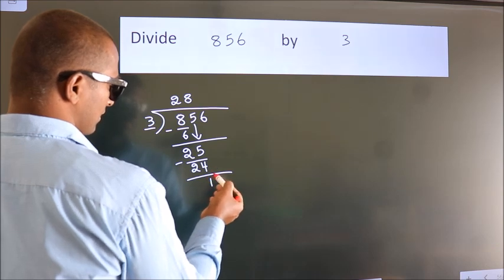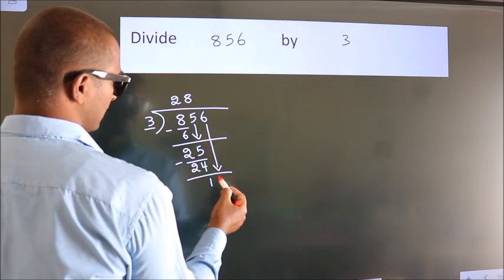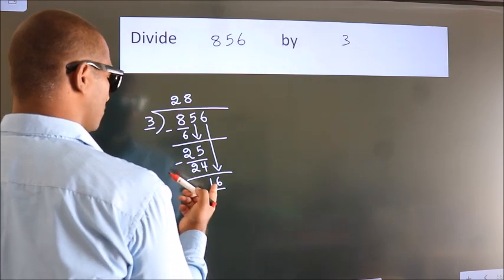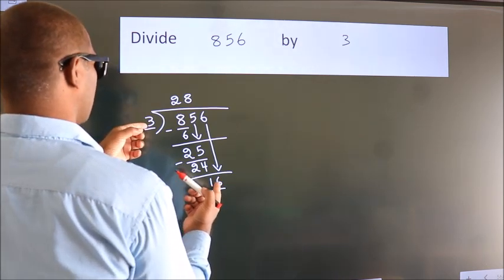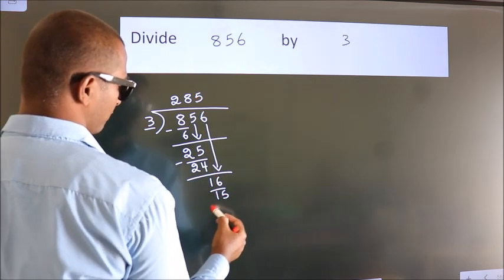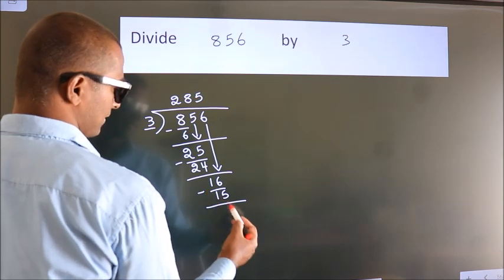After this bring down the beside number. So 6 down. So 16. A number close to 16 in 3 table is 3 5's 15. Now we subtract. We get 1.